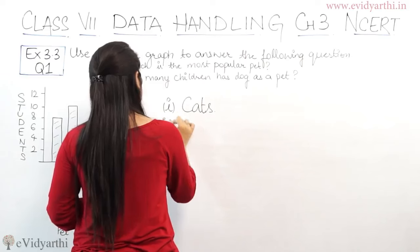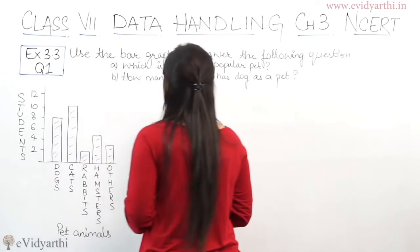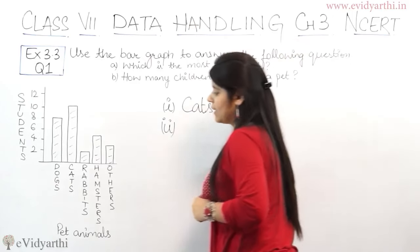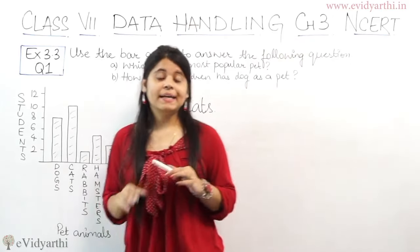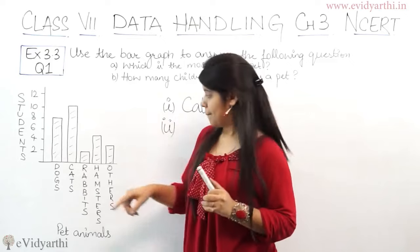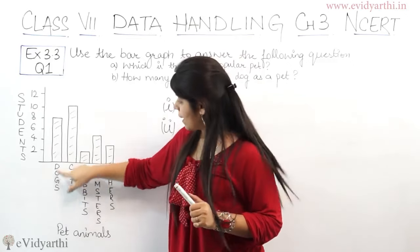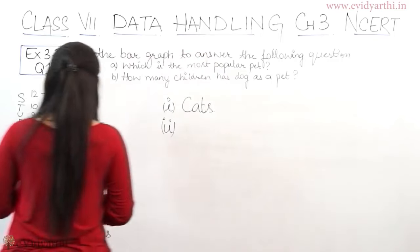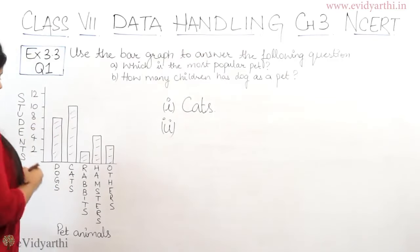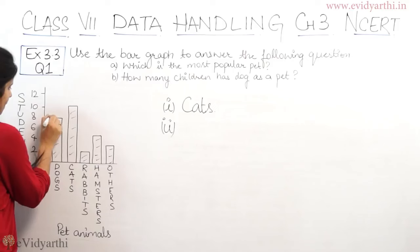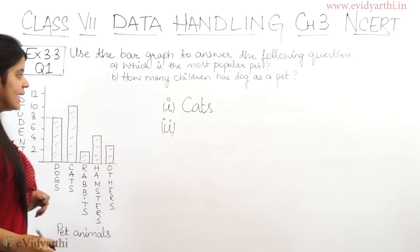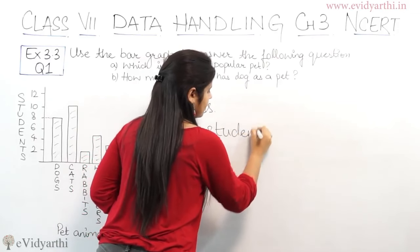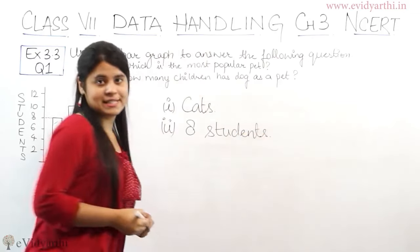Then we have the second part — how many children have dog as a pet? Ab is mein se dekho ki aapko batana hai ki kitne students ke paas dog hai. Aap dekhoge ki is ka bar kahan tak ja raha hai — it is till here, which is eight. So the answer will be eight students.